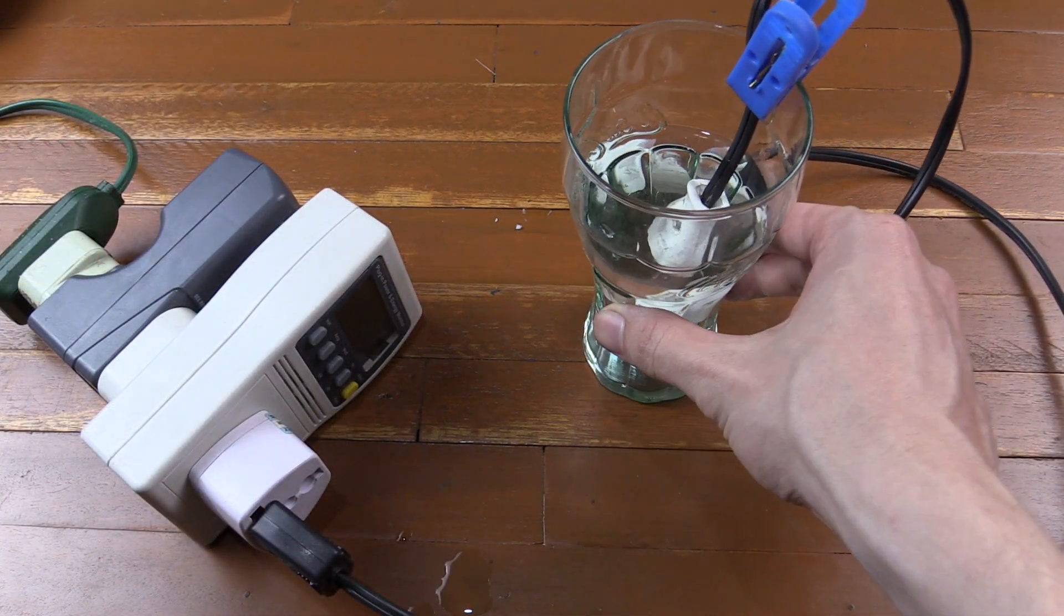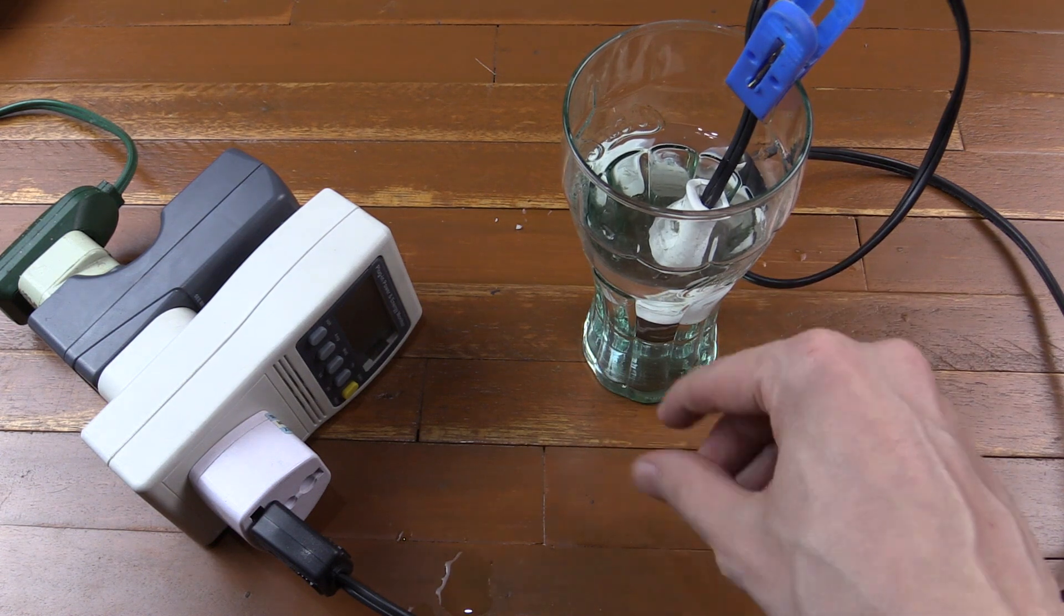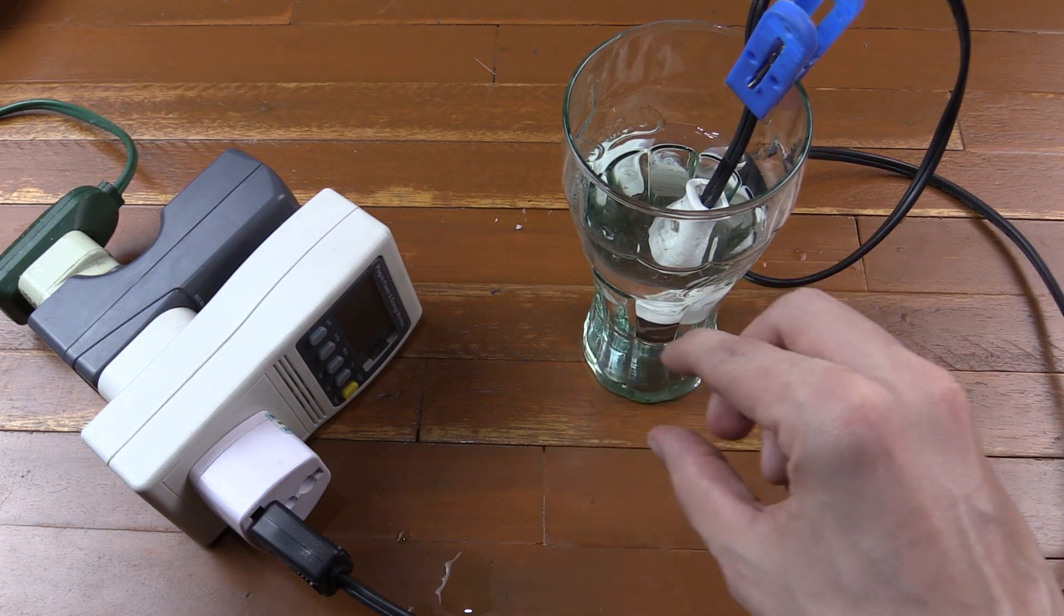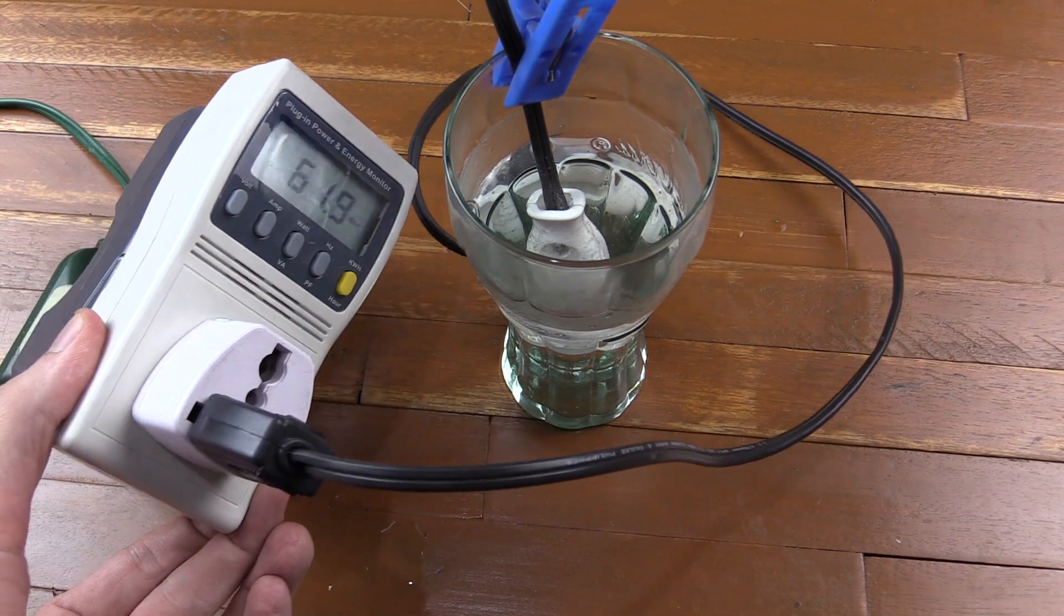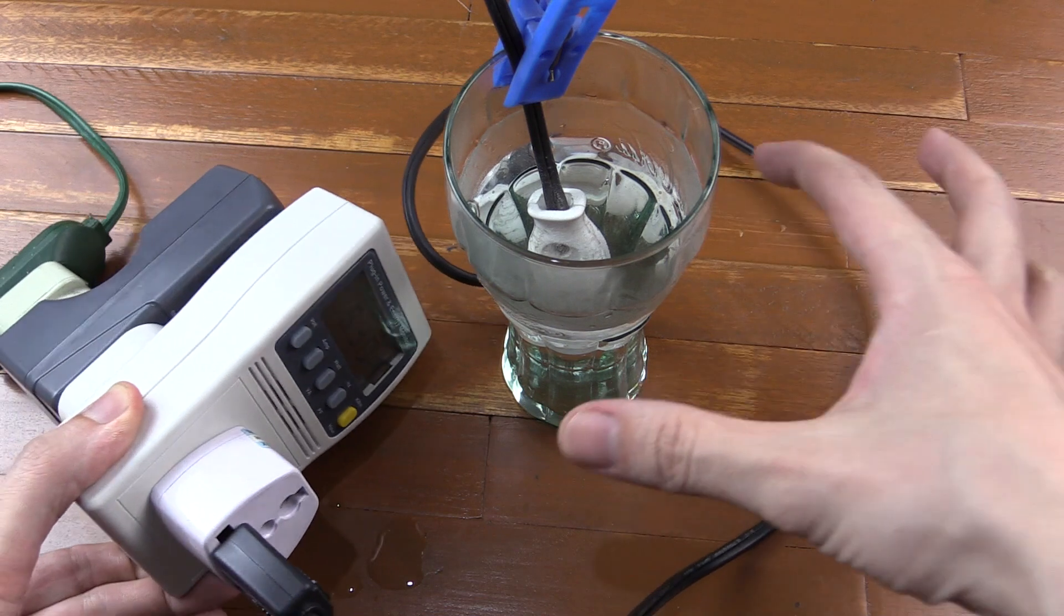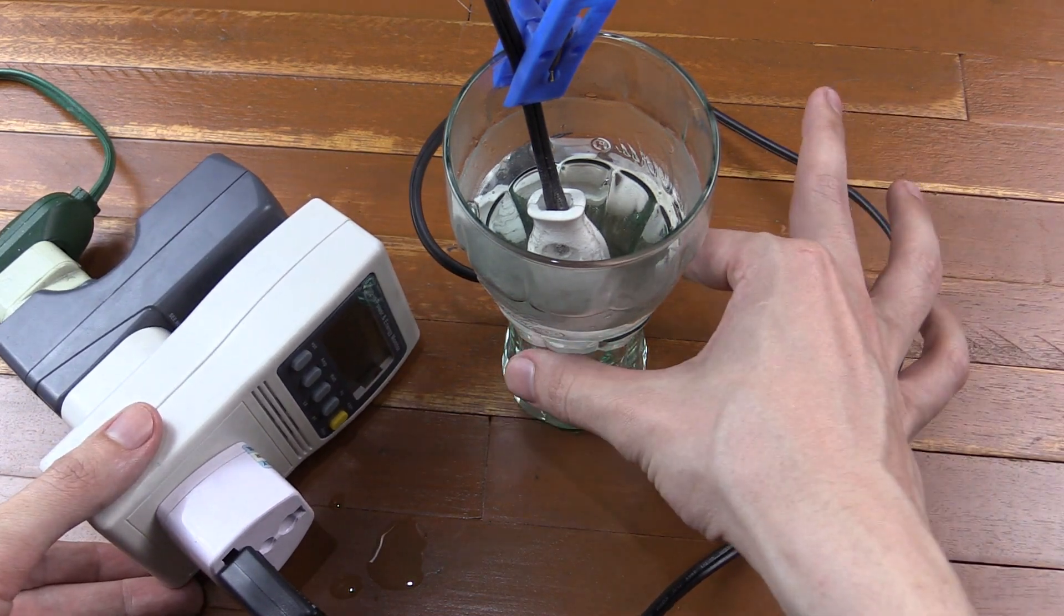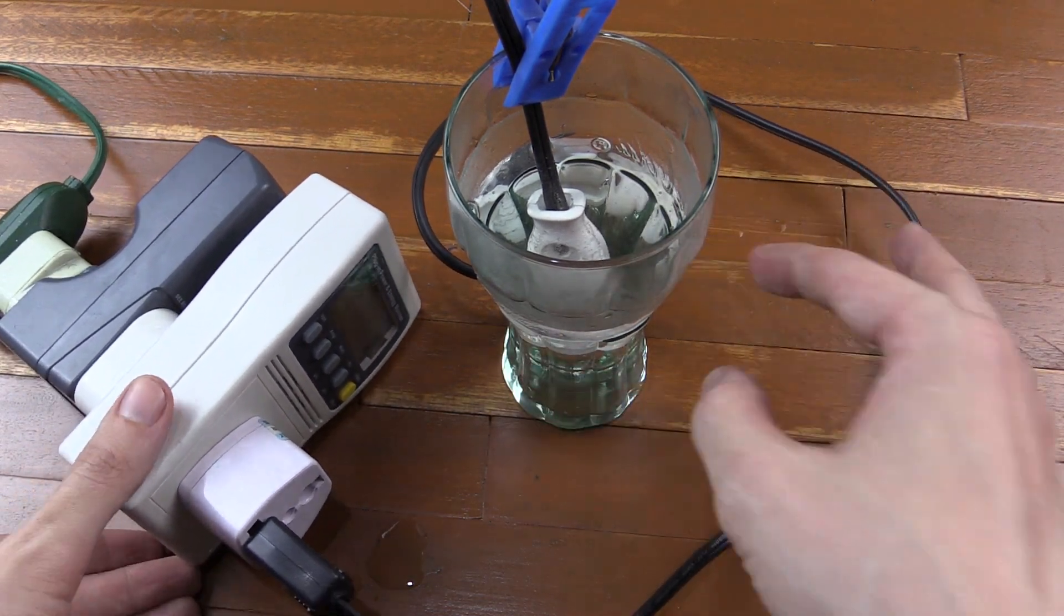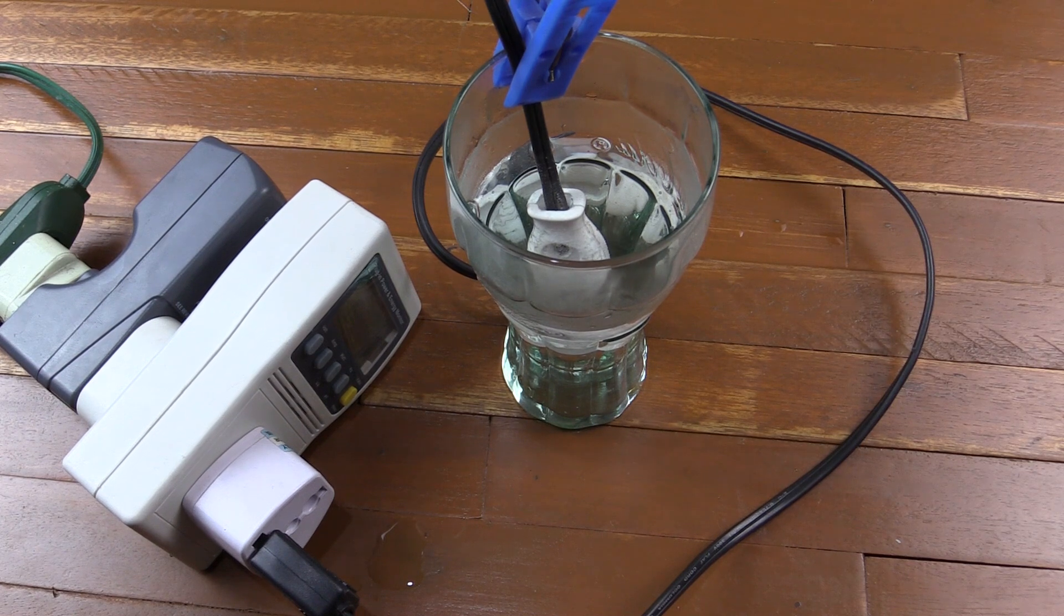Now if we actually wanted to make this heat much faster I think what we'd have to do is use bigger plates because those two prongs are very small. Now it's been running for a couple minutes and you can see the power usage has increased quite a lot. We're now at 62 watts and the glass is so hot that I can barely actually touch it without burning myself. So I think this water will begin to boil pretty soon.